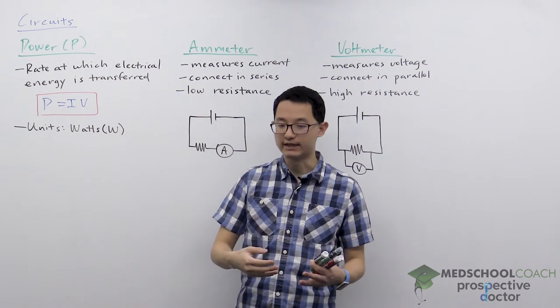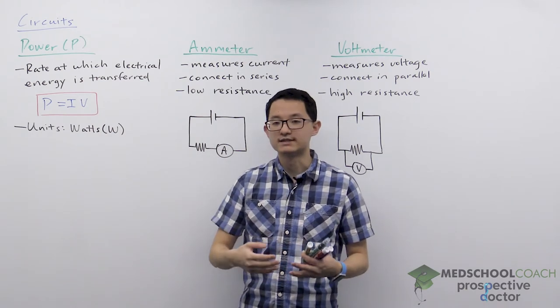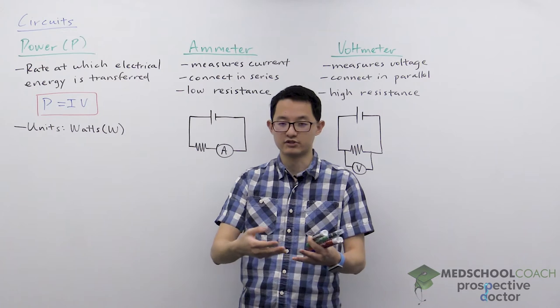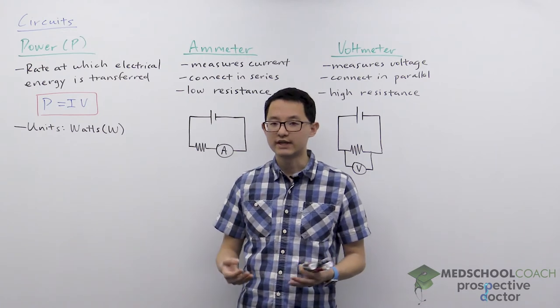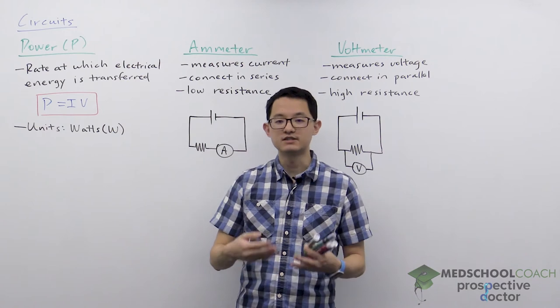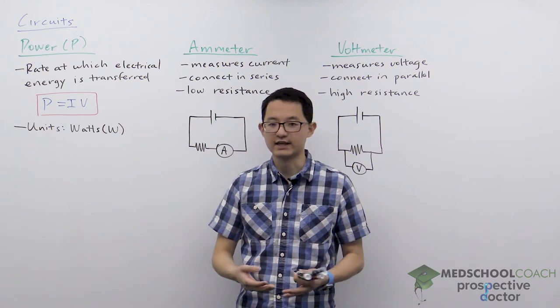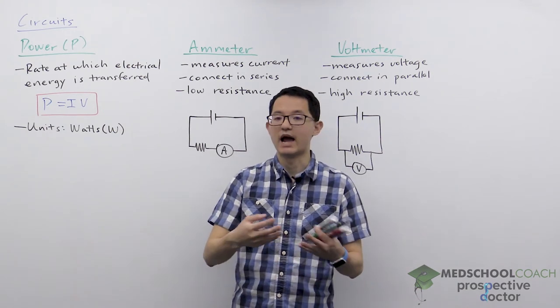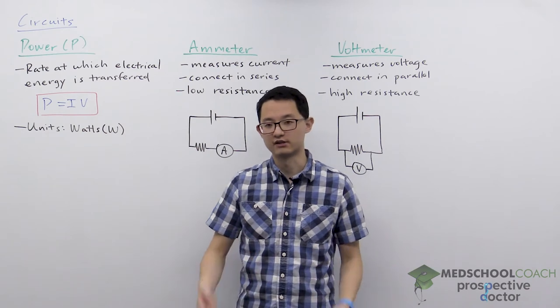This can either be looking at the battery, the rate at which the battery is delivering power to the circuit, or it can also be looking at resistors, the rate at which the resistor is dissipating electrical energy, and this would for instance be to power a light bulb or some other electrical device.